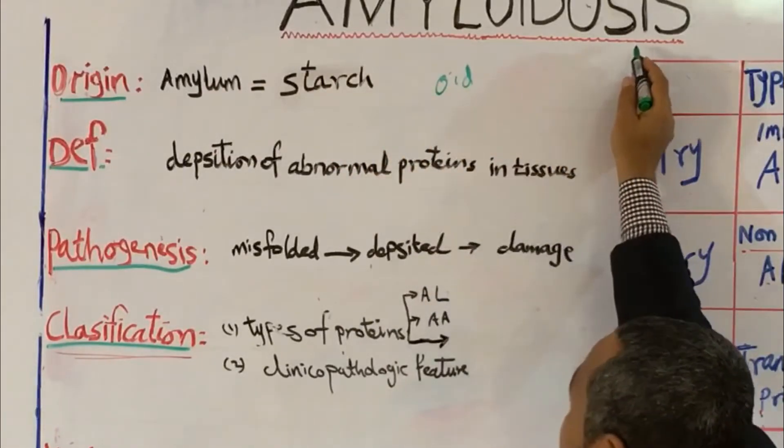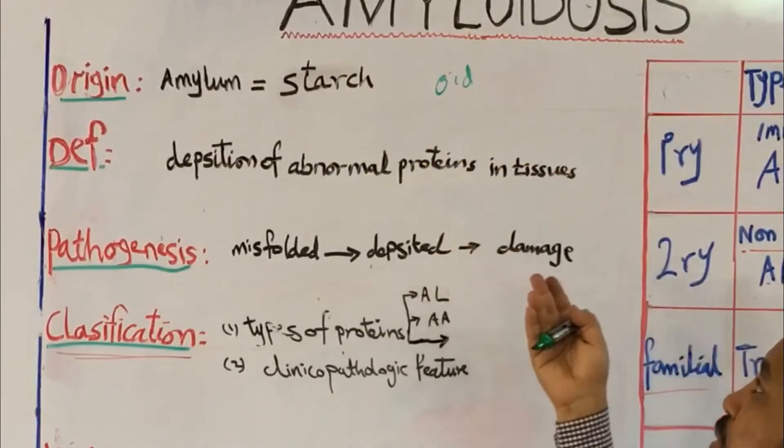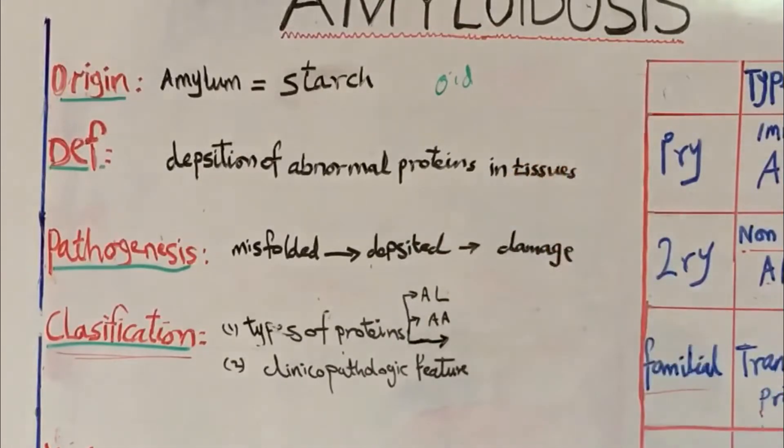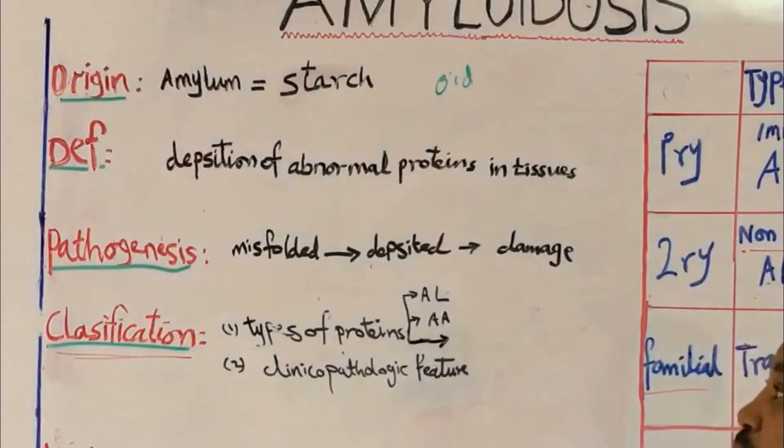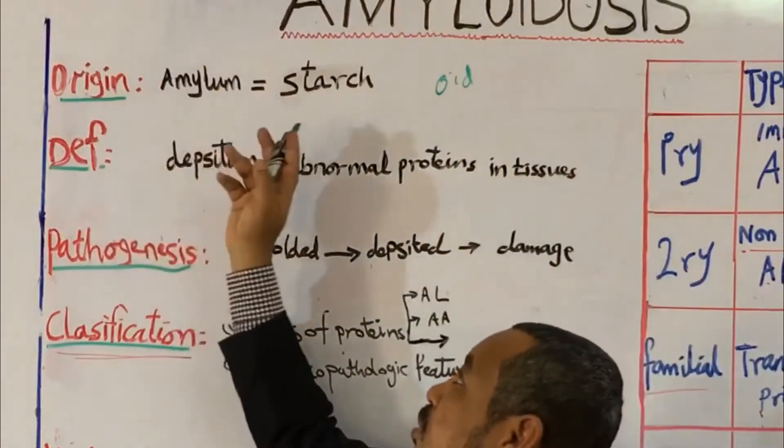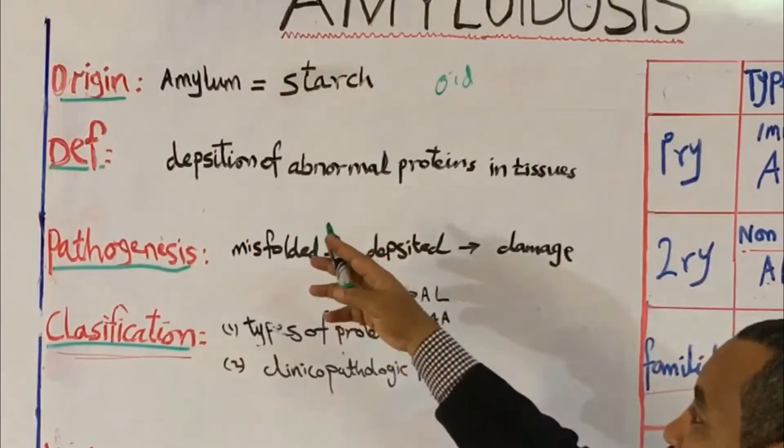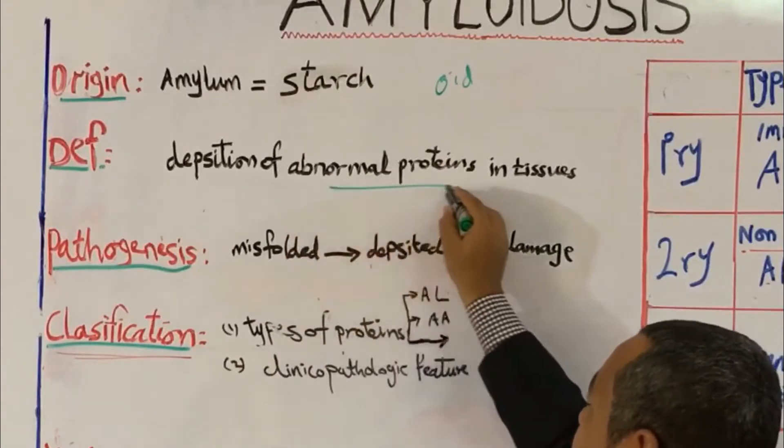So amyloidosis is similar to starch. Osis means deposition. So it's called amyloidosis. But actually it is not starch, actually it is protein. So you see here the definition of this disease, amyloidosis, is the deposition of abnormal proteins in tissues.